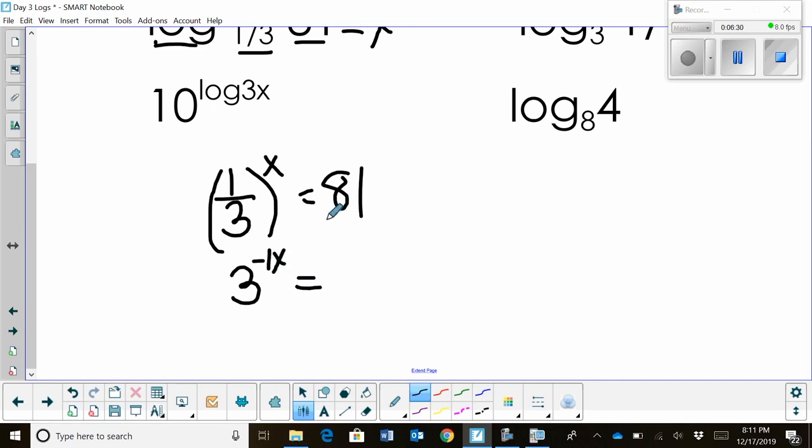So that's 3 to the negative 1 x or negative x. That equals 81. But I can also rewrite 81 as a base 3. So 3 times 3 is 9 times 3 is 27 times 3 is 81. So that's 3 to the 4th power. So I have negative 1 x is equal to 4. So x is negative 4.